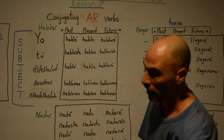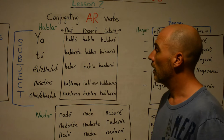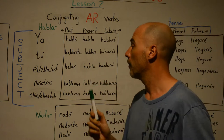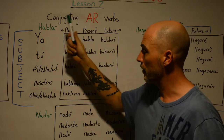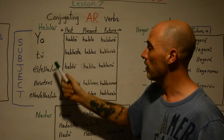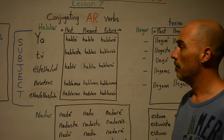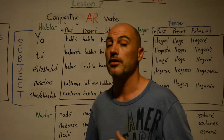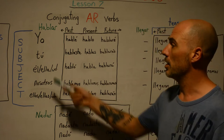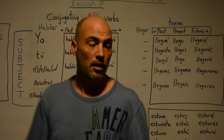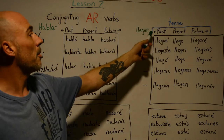A few rules of engagement here, alluding back to previous lessons: we're dealing with the subjects I, you, he or she, we, and they. The subjects never change when you're conjugating verbs. We deal with the subjects and then we deal with the tense — the tense being either past, present, or future.